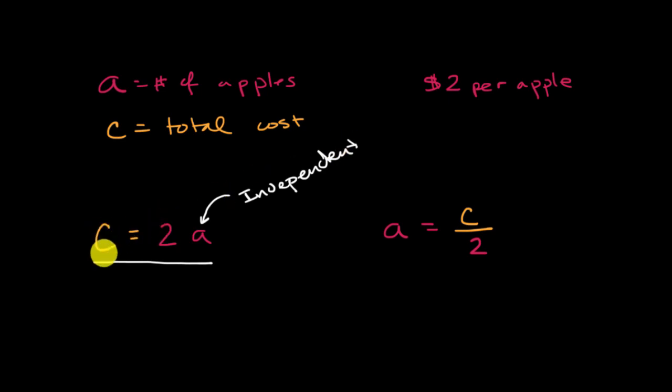And then the one that we are essentially solving for, that we then spit out a value after we compute using the independent variable, you call that the dependent variable. You could view it as, look, in this situation, the cost is dependent on the number of apples you choose to eat.